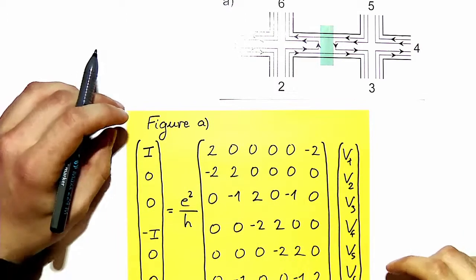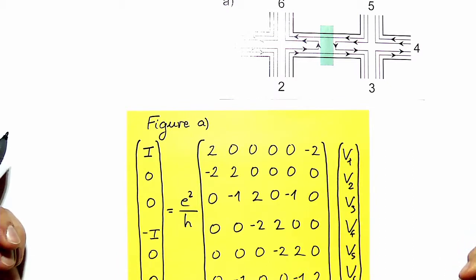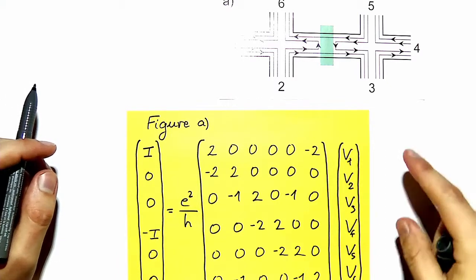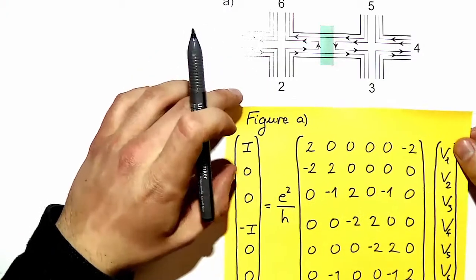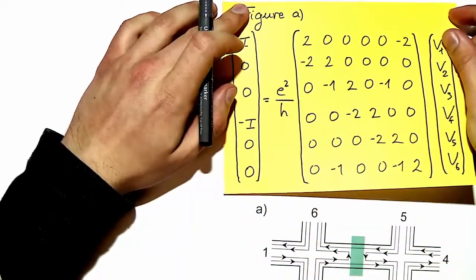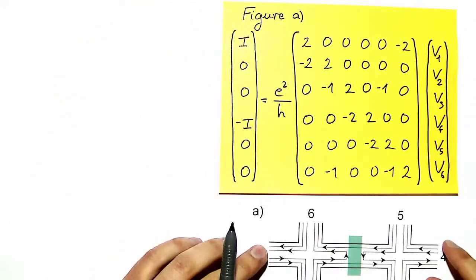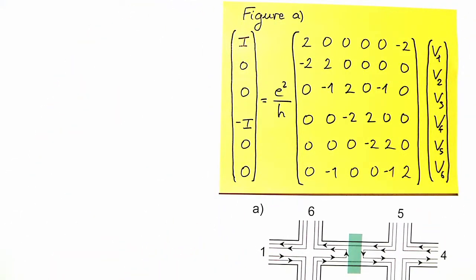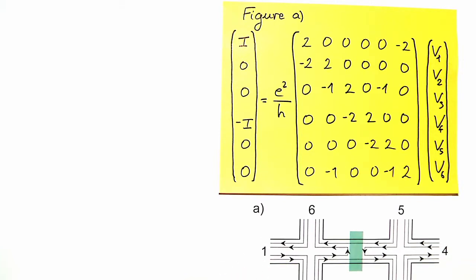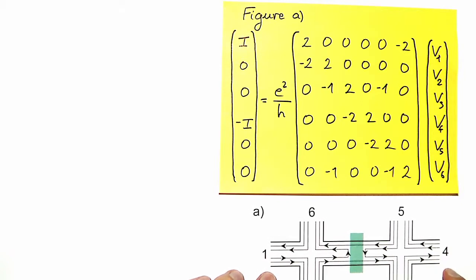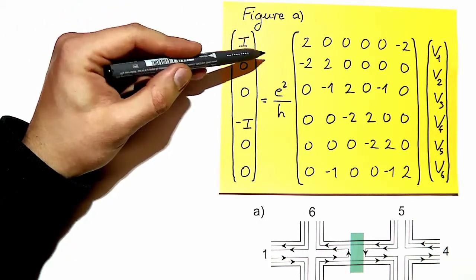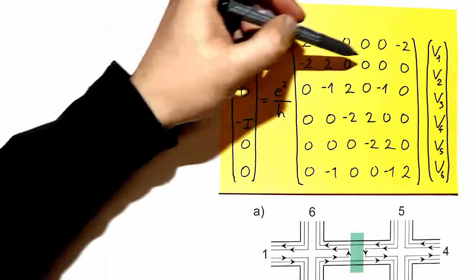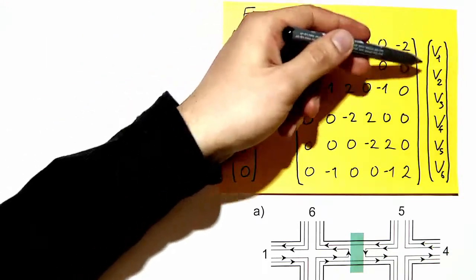Now we have a complete transmission matrix, and this gives us a system of equations that allows us to compute any voltage difference in the sample. Writing down a few relations useful to calculate all voltages, longitudinal voltages, and the two-terminal voltage: from the second row we see that 0 equals minus 2 times v1 plus 2 times v2, so v1 and v2 are equal.